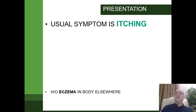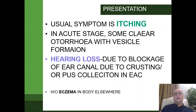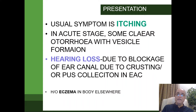The usual symptom is itching or irritation in the ear. Depending upon the stage, if it is acute, there may be ear discharge with vesicle formation, and this ear discharge will be watery or transparent. Some hearing loss is expected due to blockage of the ear canal from crusting. If there is superadded infection, the discharge — instead of being clear or transparent — may become purulent, with pus collecting in the external auditory canal and blocking the transmission of sound waves to the middle ear.